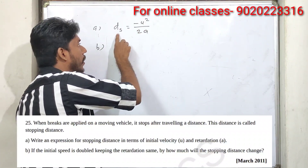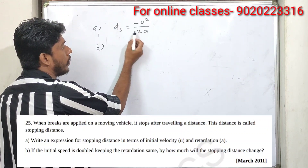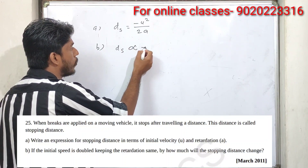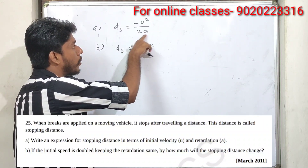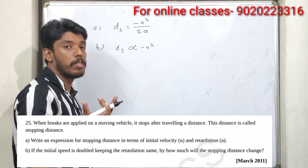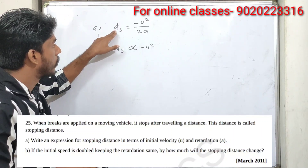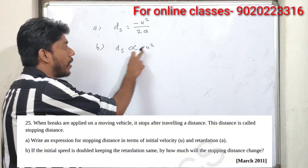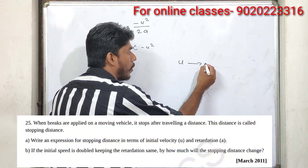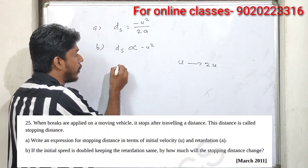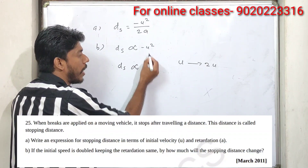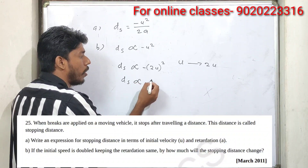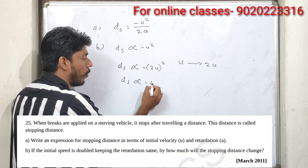If the initial speed is doubled while keeping the retardation the same, by how much will the stopping distance change? Since retardation a is constant, the stopping distance ds is directly proportional to u squared. If u is doubled to 2u, then ds is proportional to 4u squared — so the stopping distance becomes 4 times the original.